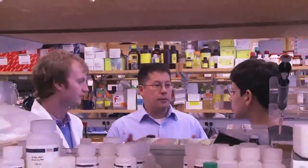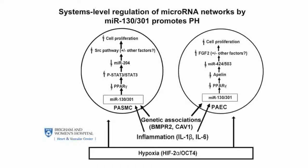We then wanted to determine and validate this model experimentally. First, in cultured pulmonary endothelial and smooth muscle cells, we used a comprehensive set of gain-of-function and loss-of-function approaches to manipulate miR-130 and 301, as well as their downstream effectors, in order to prove their pro-proliferative actions via regulation of miR-424, 503, and miR-204.